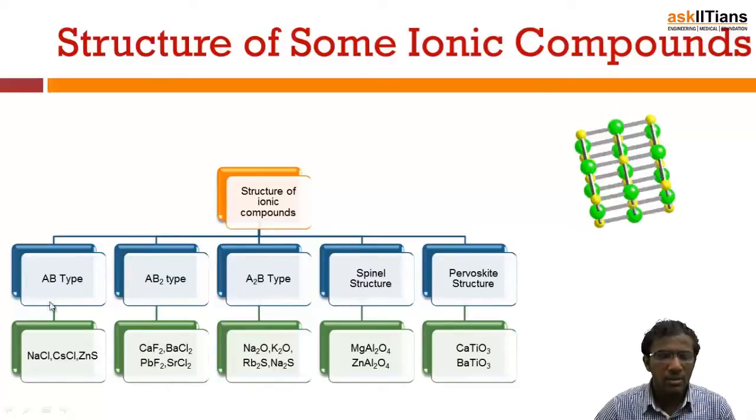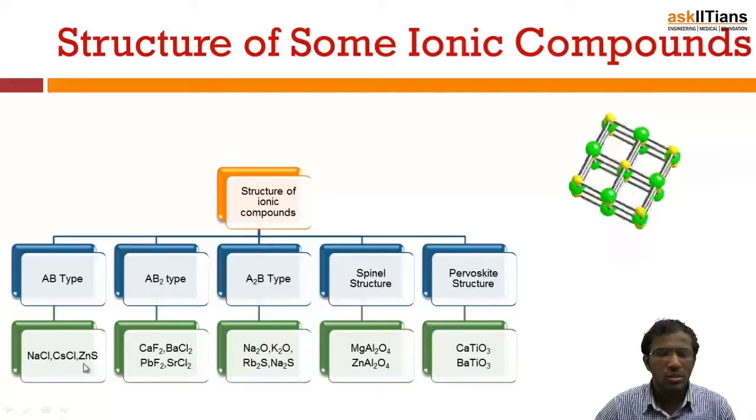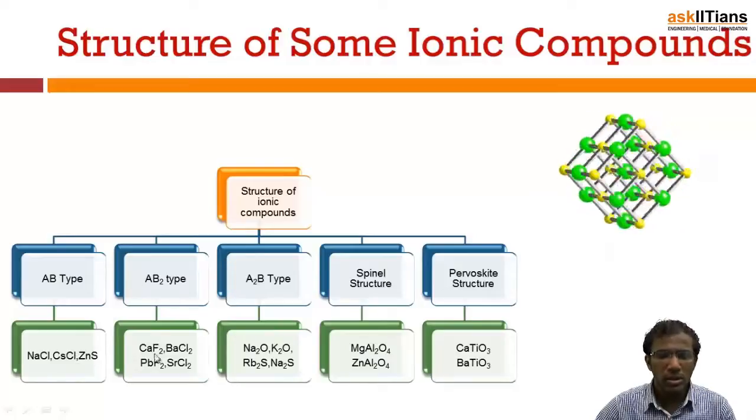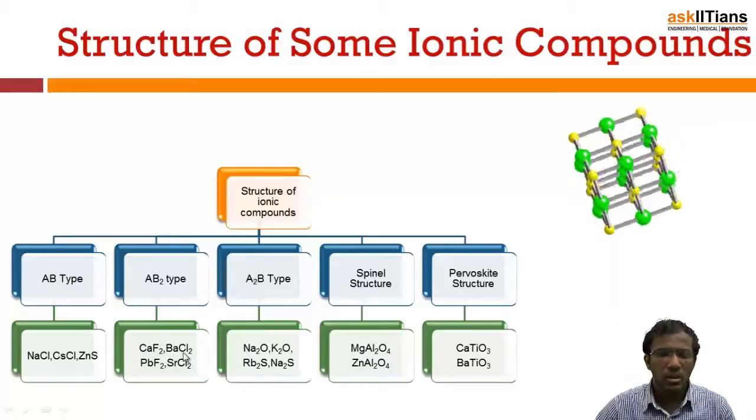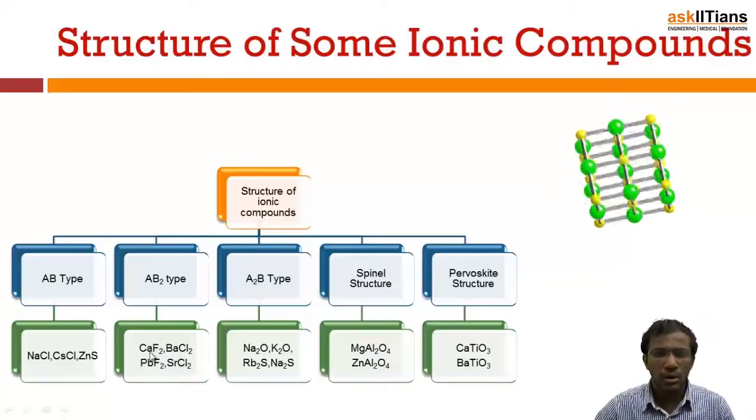So under AB type, we'll discuss sodium chloride structure and zinc sulphide structure. Under AB2 type, we'll discuss only calcium fluoride structure because all these three also have similar structure as calcium fluoride.